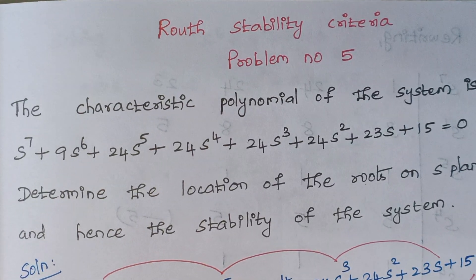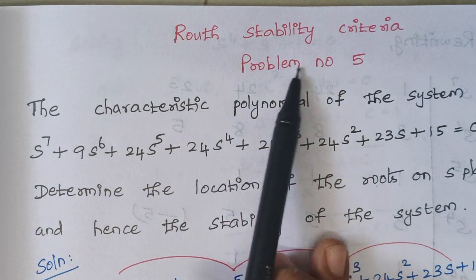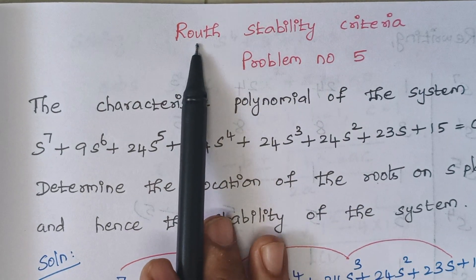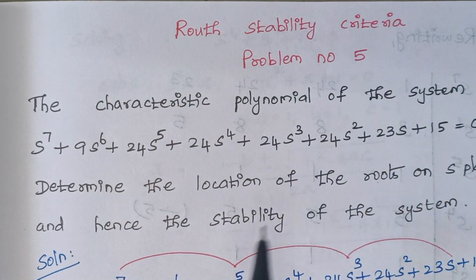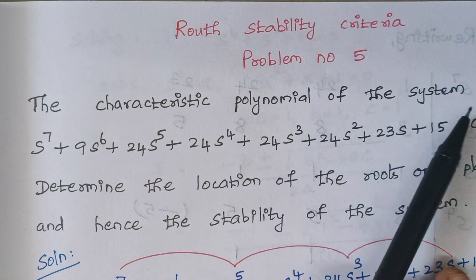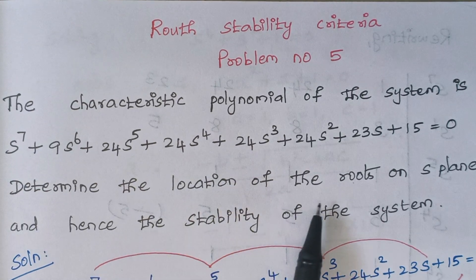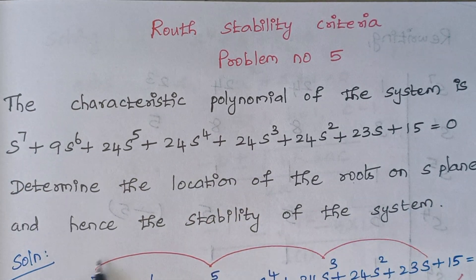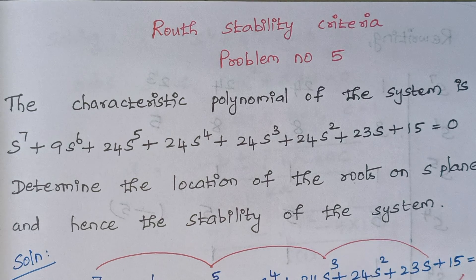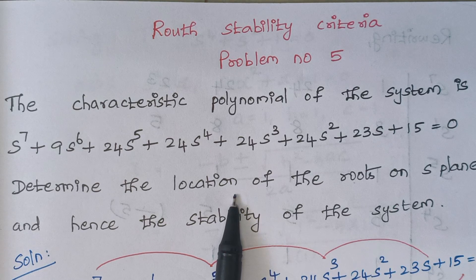Hello viewers, I am Kouselya. Today we are going to solve problem number 5 under the category route stability criteria. The problem is the characteristic polynomial of the system is given. We have to determine the location of roots on the S plane and hence the stability of the system — checking whether the system is stable or not and finding where the roots are located on the S plane.